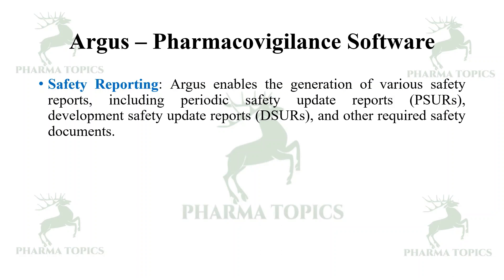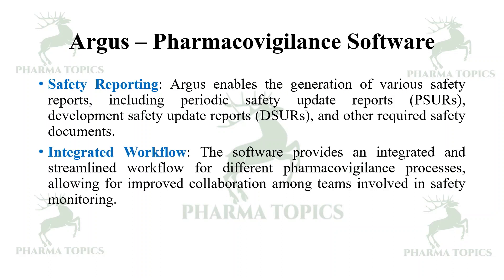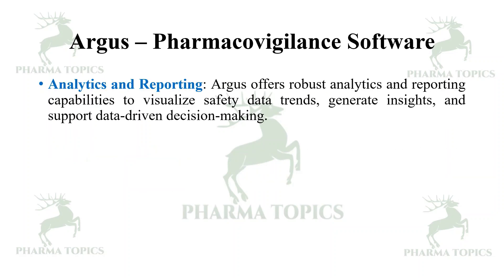Safety reporting: Argus enables the generation of various safety reports such as Periodic Safety Update Reports (PSURs) and Development Safety Update Reports (DSURs), along with other required safety documents. The software also provides an integrated and streamlined workflow for different pharmacovigilance processes, allowing for improved collaboration among teams involved in safety monitoring. Argus offers robust analytics and reporting capabilities to visualize safety data trends and generate insights to support data-driven decision making.